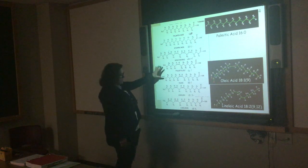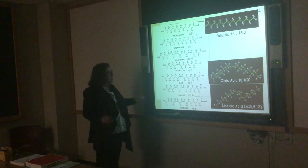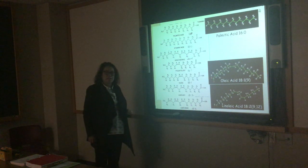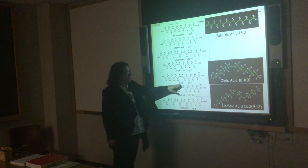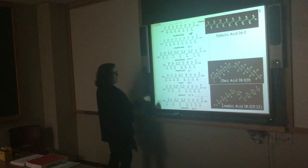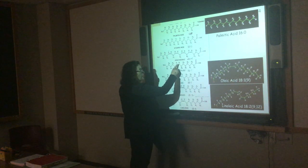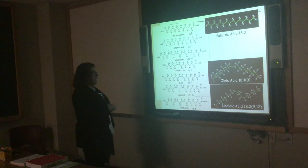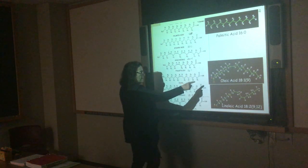We do have fatty acids that have one double bond — those are called monounsaturated fatty acids. The two prevalent monounsaturated fatty acids in meat are palmitoleic and oleic. Palmitoleic has 16 carbons and one double bond, located at carbon 9 from the carboxyl. Oleic has 18 carbons and one double bond, also at carbon 9 — written as 18:1(9). You can count 18 carbons in oleic, and the double bond is located nine carbons from the carboxyl group.